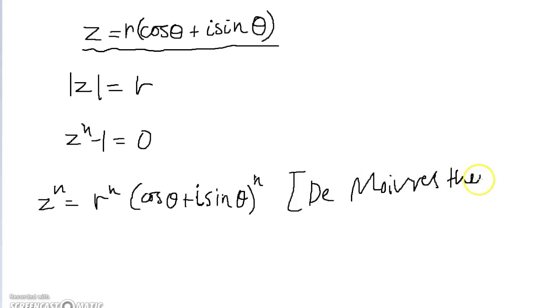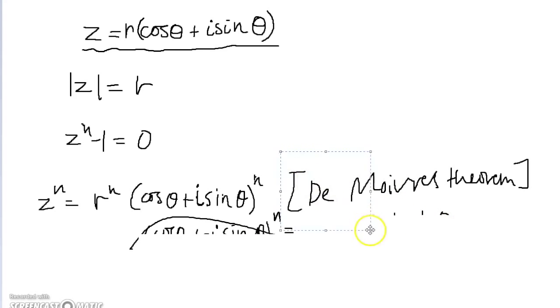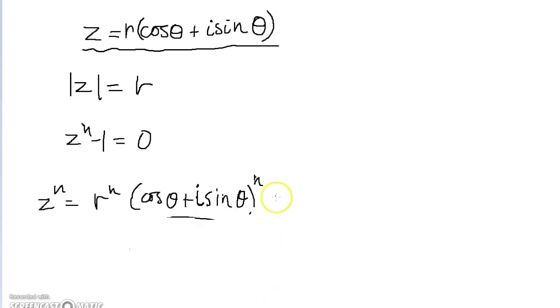We're going to need to use a theorem called de Moivre's theorem, which we will not prove in this video. All it really says is, if we have a complex number, cosine theta plus i sine theta, which is of length 1, and we raise it to the power n, then this is the same thing as cosine n theta plus i sine n theta. So we're going to have to take that for granted in this video. We don't really have time to prove it. So given that that's true, how can we rewrite z to the power n? Well, we can just directly apply de Moivre's theorem. So z to the power n is r to the n into cosine n theta plus i sine n theta.